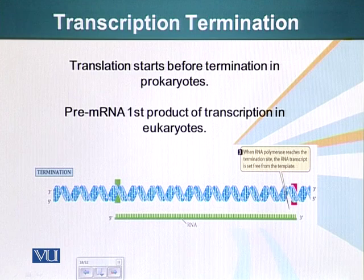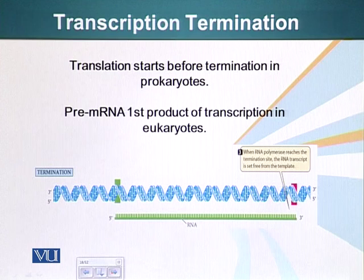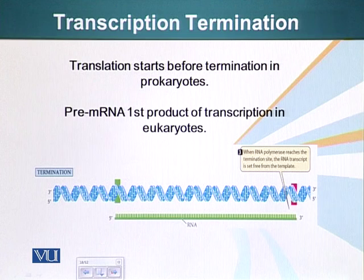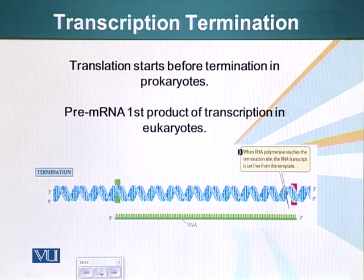There is an important difference between prokaryotes and eukaryotes. In prokaryotes, the DNA is not enclosed in a nucleus — it is out in the cytoplasm in the nucleoid region. So as the RNA is being made, the translation process also starts simultaneously, meaning the RNA is being concurrently made and also converted into a protein molecule.